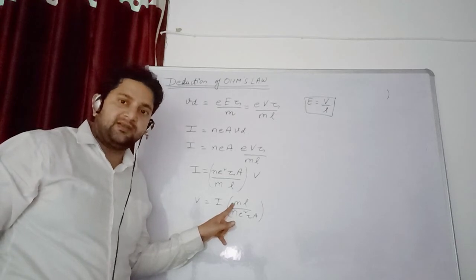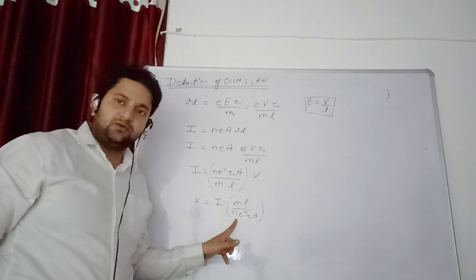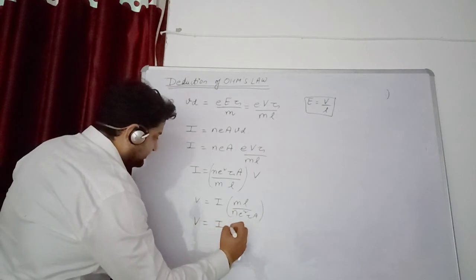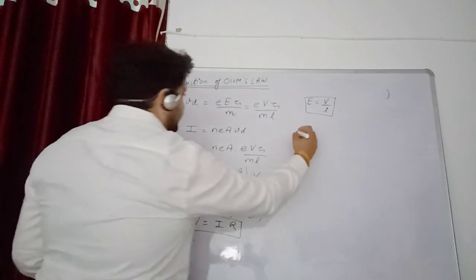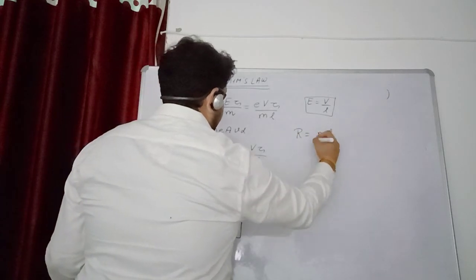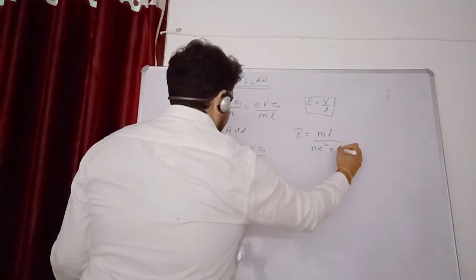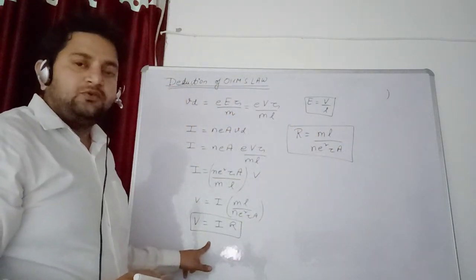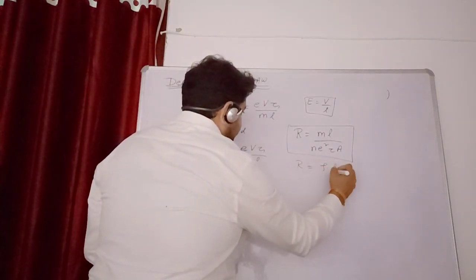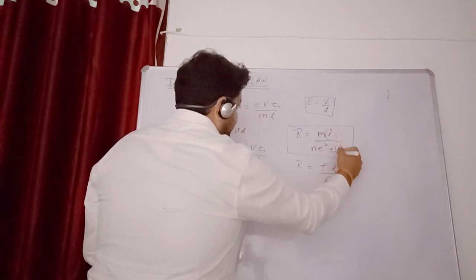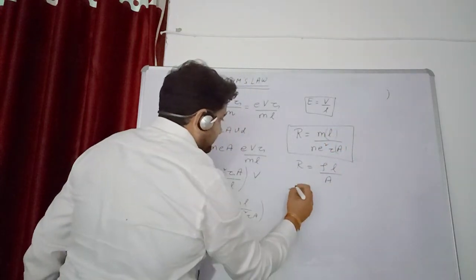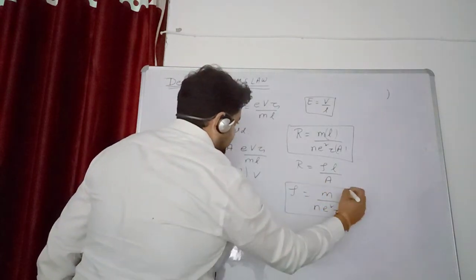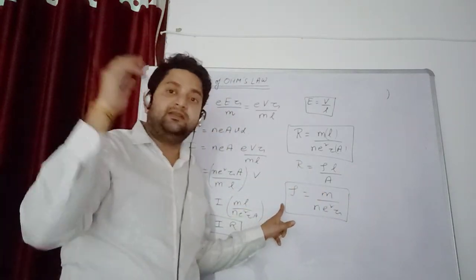Now all these things are constant: mass of electron is 9.1 into 10 power minus 31, length is constant, number of electrons per unit volume is constant, charge of electron is constant. Everything is constant here. So we can put a constant name: resistance. So clearly R equals M L upon N E square tau A. This is resistance. We have derived an expression for Ohm's law. Secondly, we see R equals rho L upon A. If I compare, these two equations show that rho equals M upon N E square tau.